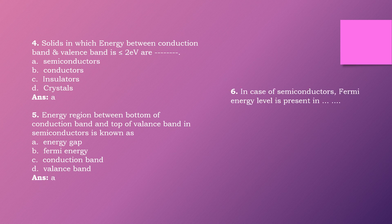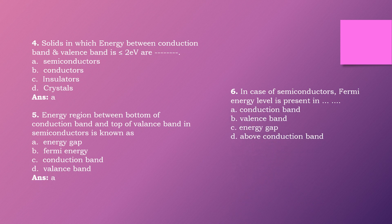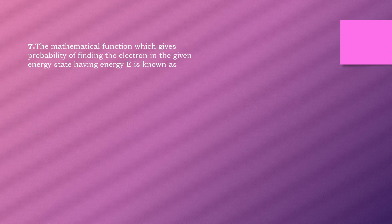Question six: In case of a semiconductor, the Fermi energy level is present in dash. Options are: conduction band, valence band, energy gap, above conduction band. The right answer is option C: energy gap.